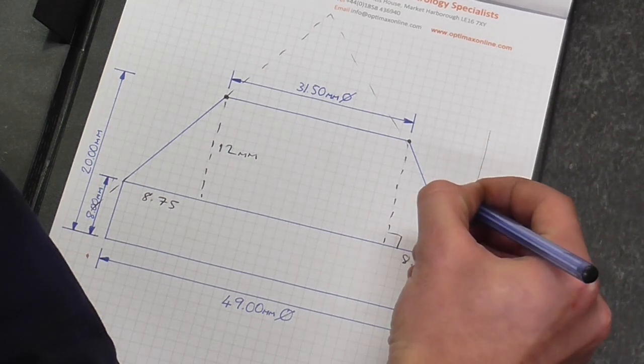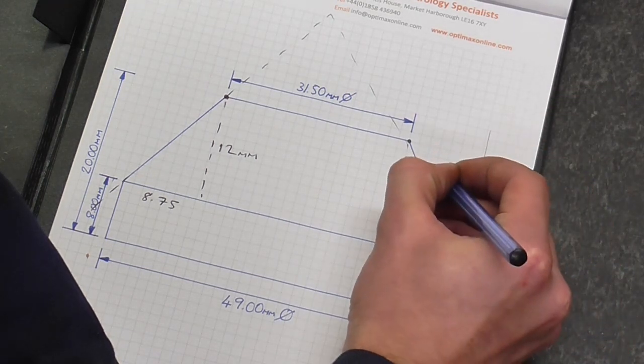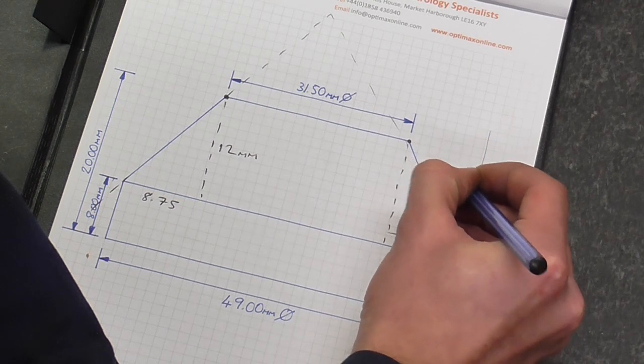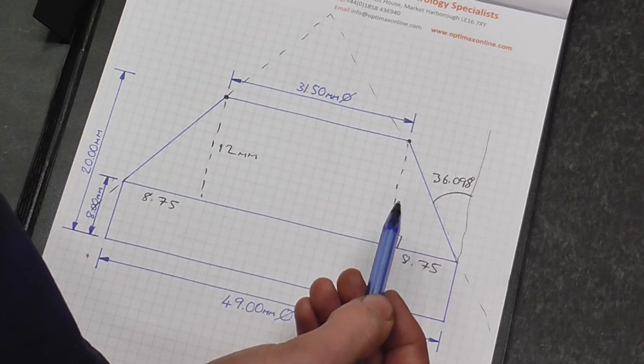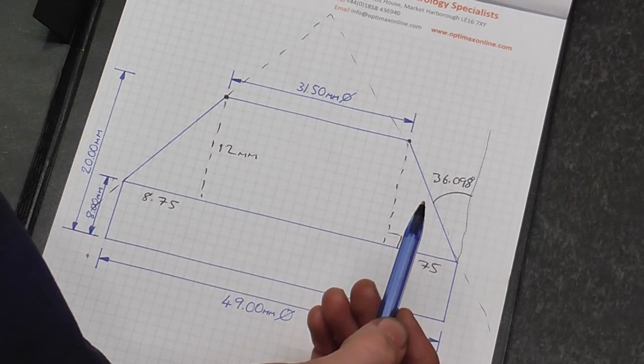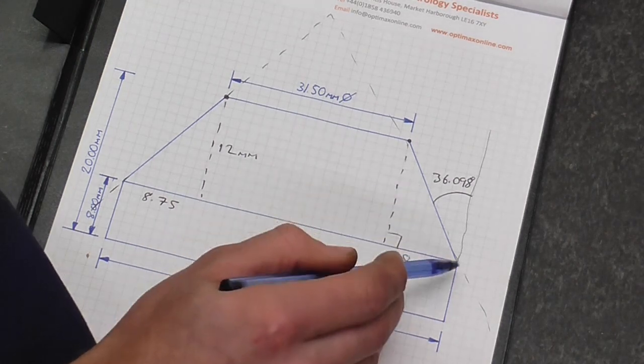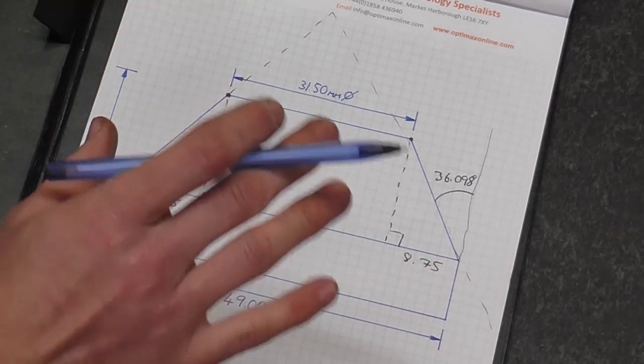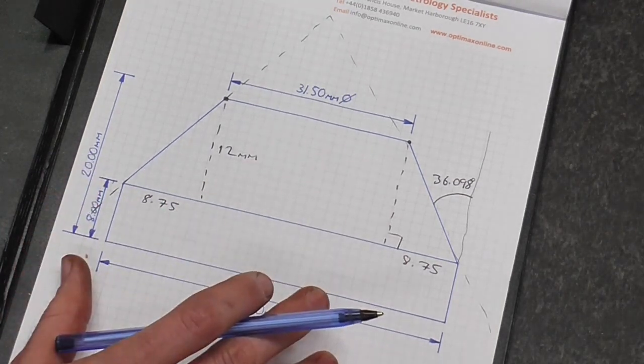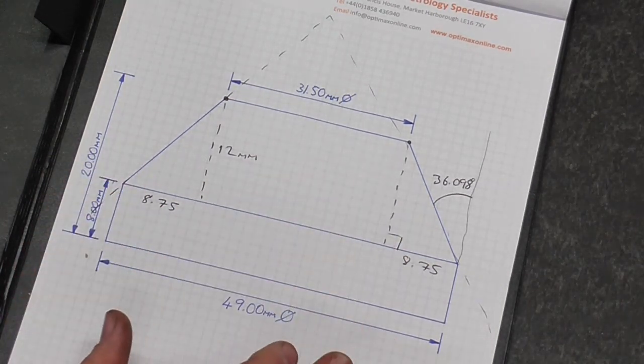Here, which is what we want for the machine, of 36.098 degrees. I'm going to be doing this on the Myford lathe and I'm going to be using the top slide to do it, so I need a top slide angle of 36.098. That's all the information required.